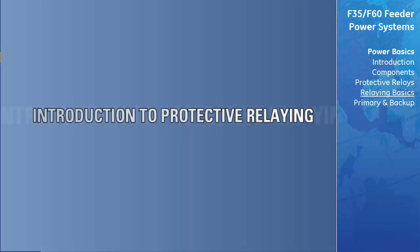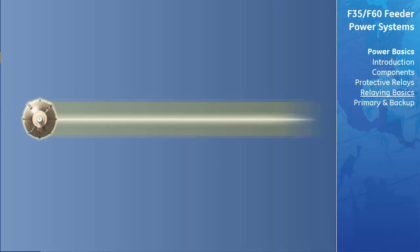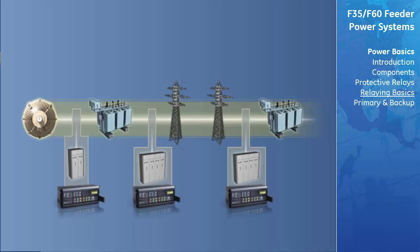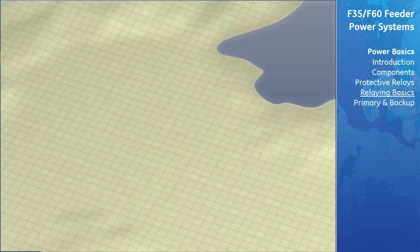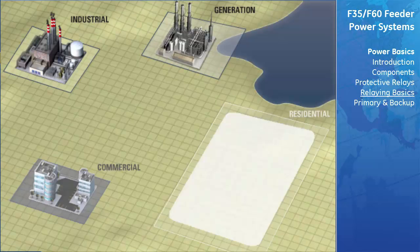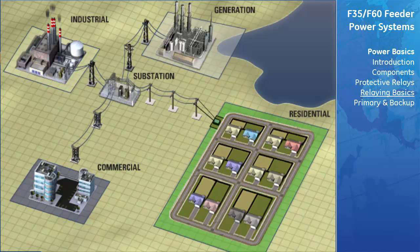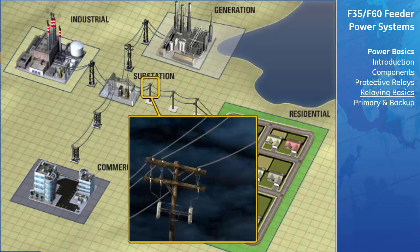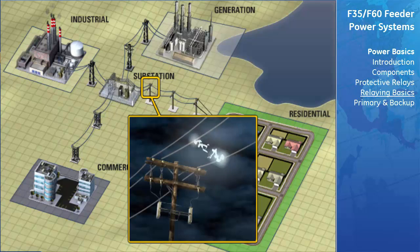The function of protective relaying is to immediately remove any component of a power system when it suffers a fault that might result in damage to property or unsafe conditions. In addition, protective relays can provide information on the locations and types of failures that occur. This information not only helps with equipment repair, but also provides the means for analyzing the effectiveness of the protection scheme.